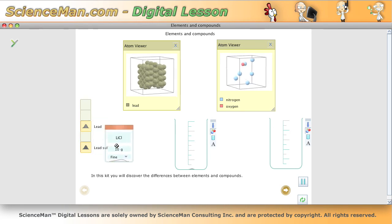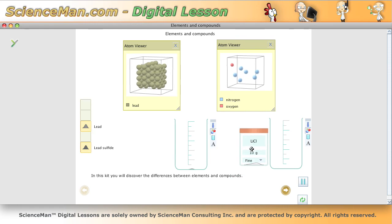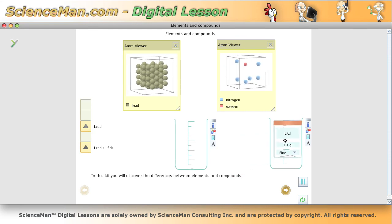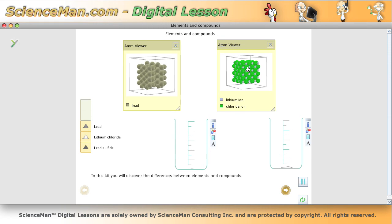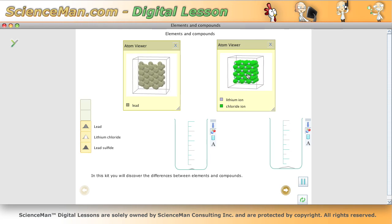Let's take lithium chloride and drop it into this beaker. Again we have, if you look close, two different types of atoms visible in our atom viewer arranged in a crystal lattice. So we're again looking at a compound.